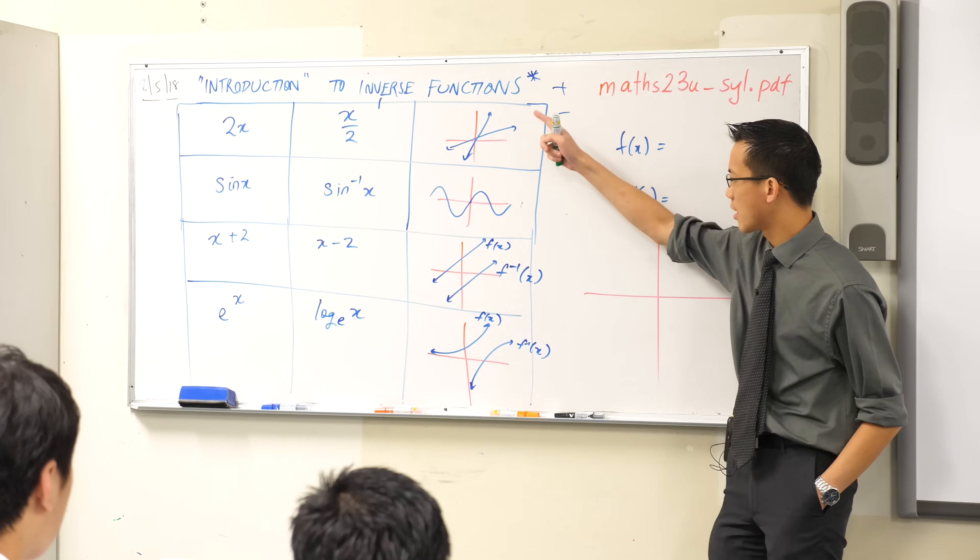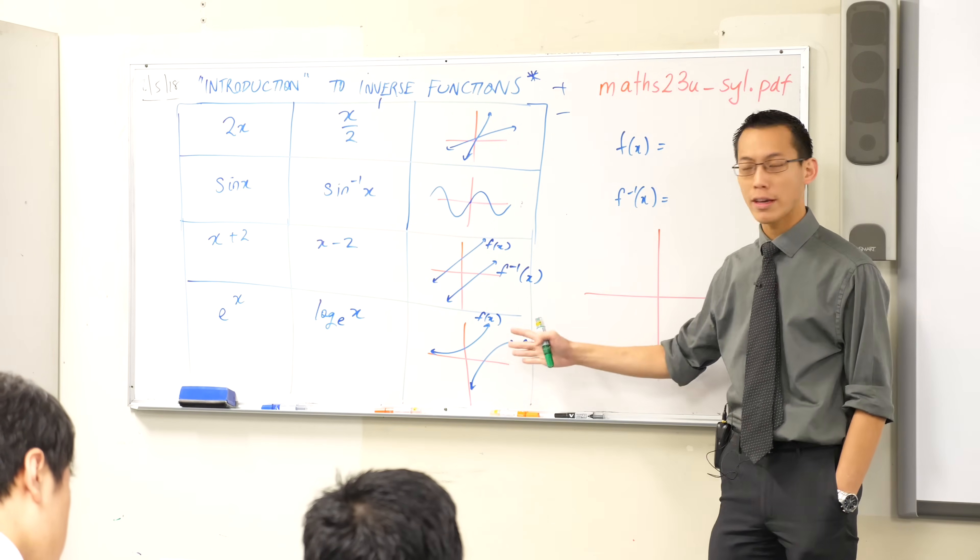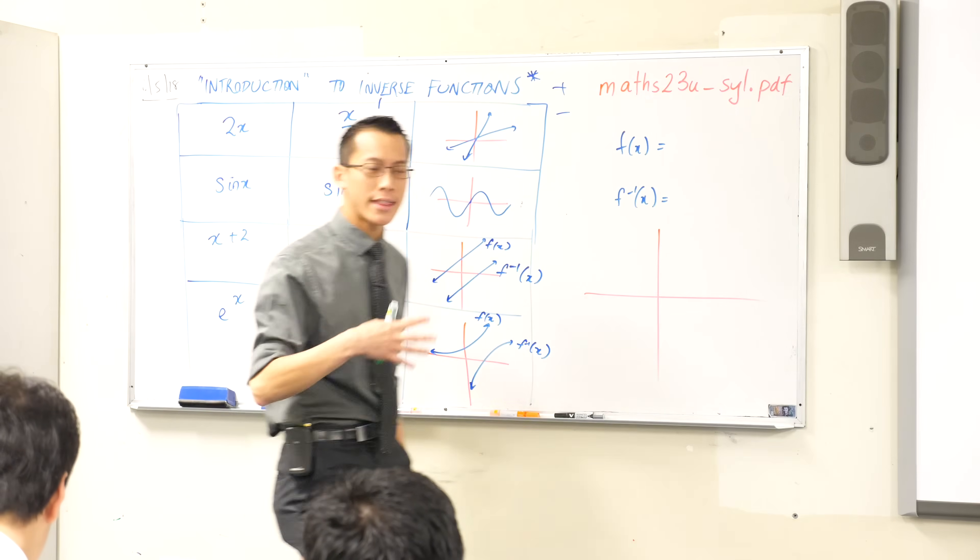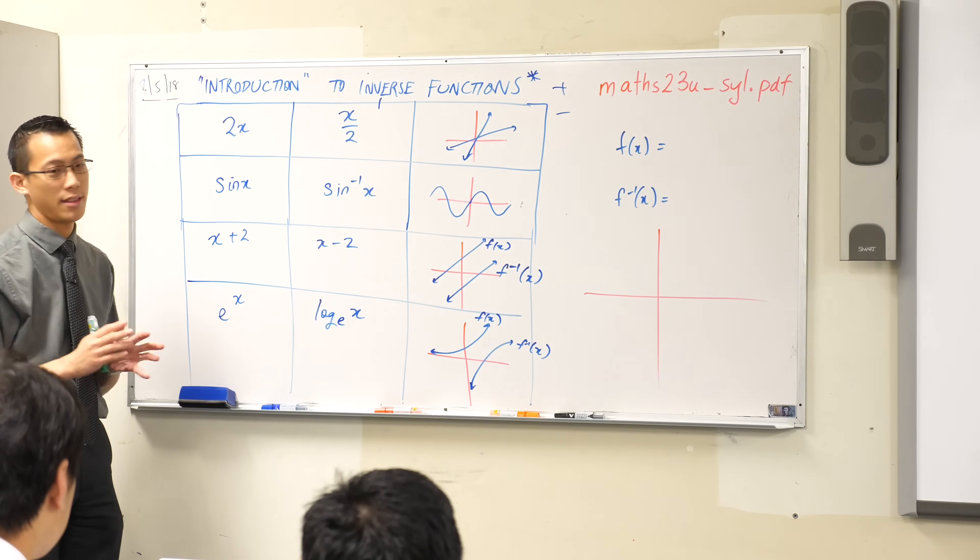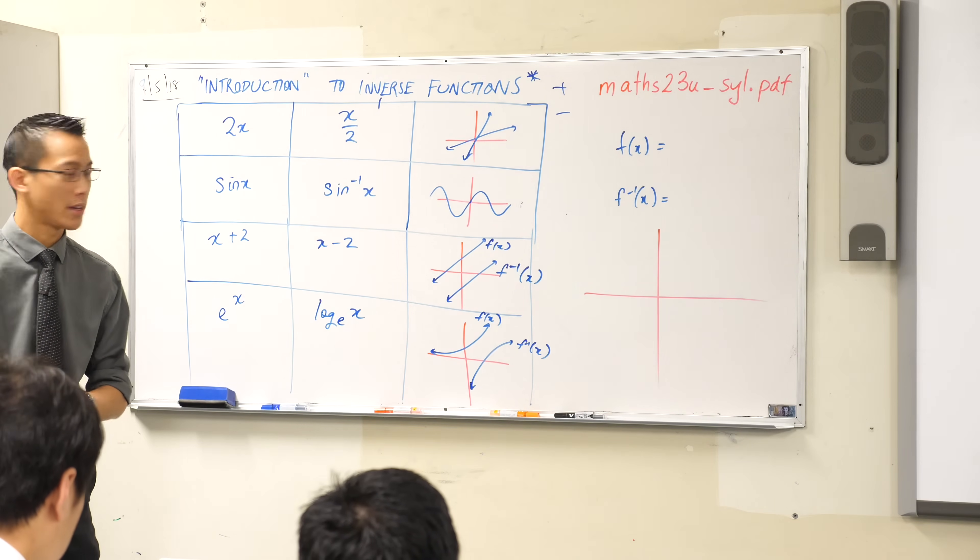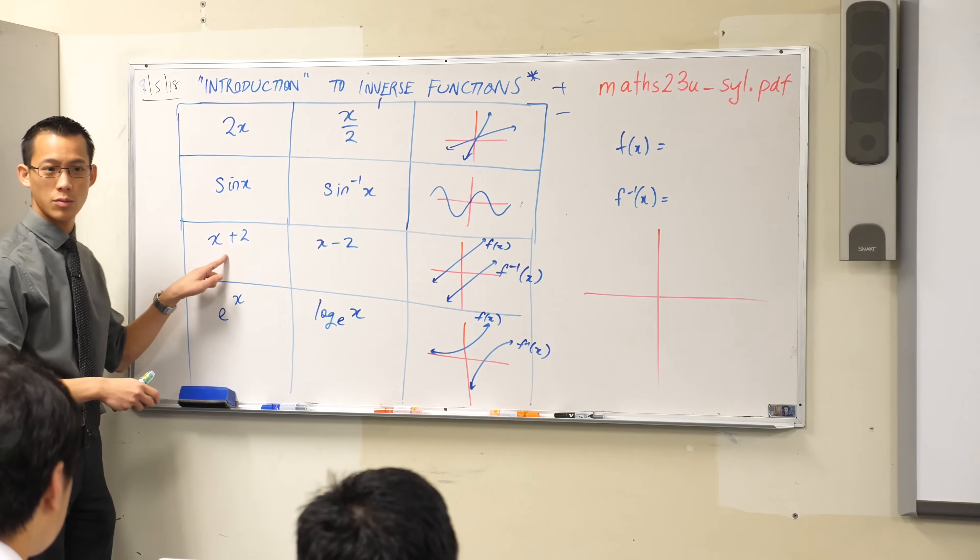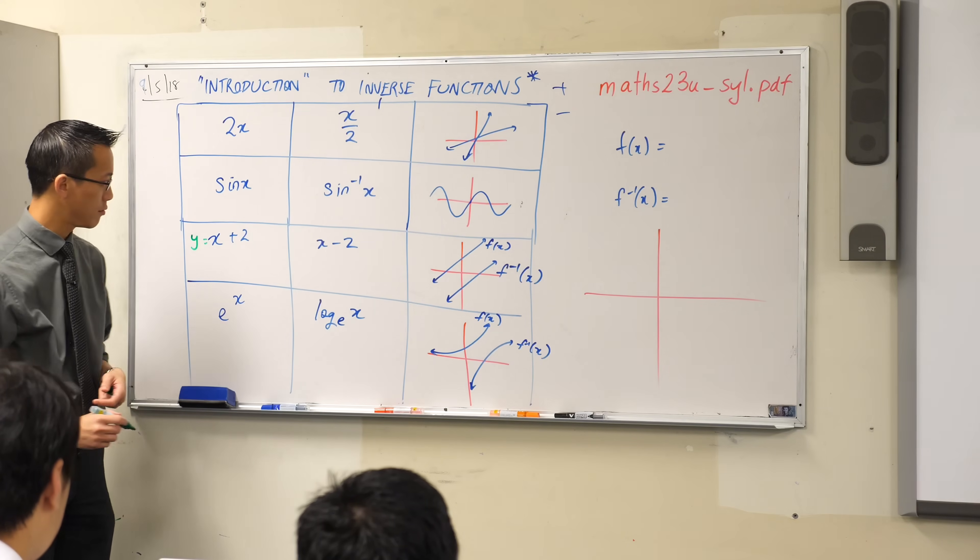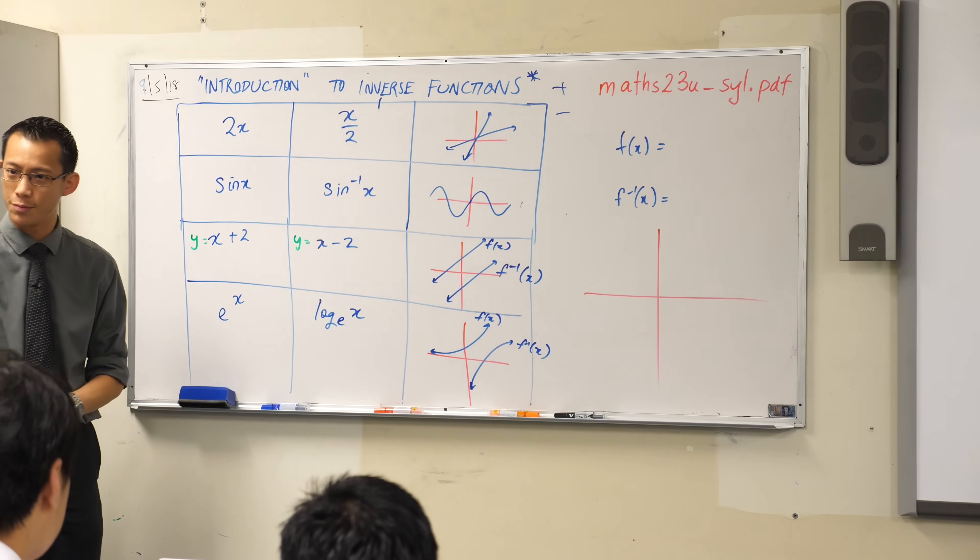when you have a look at the three that I've drawn anyway, I've got the x plus 2 x minus 2, I've got e to the x and log base e of x and then I've got 2x and x on 2. We can think about these things in a few different ways. Firstly, we can think about them algebraically. Okay, so if we had, for instance, let's just do this one over here. Okay, if I said y equals x plus 2 and y equals x minus 2. Okay,